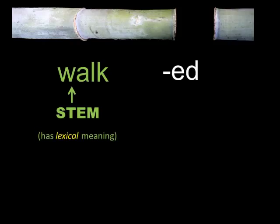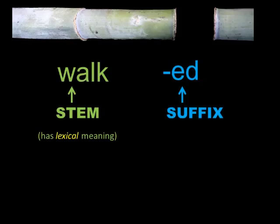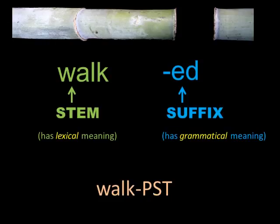The other morpheme in this word is 'ed'. This comes after the stem, so it is called a suffix. 'Ed' is not a morpheme you could look up in a dictionary. Linguists say it has grammatical meaning, telling us that something happened in the past. Linguists write grammatical meanings with capital letters, using a hyphen to show that these two morphemes make up one word, and the capital letters PST to show the meaning of the 'ed' suffix.